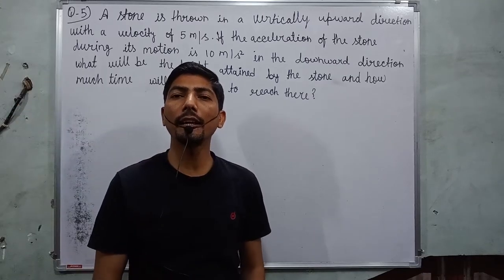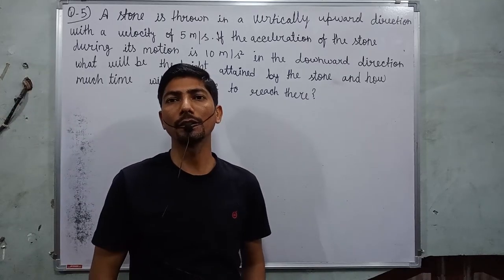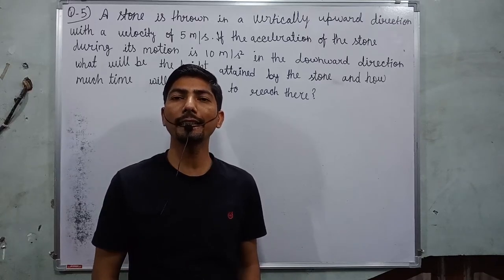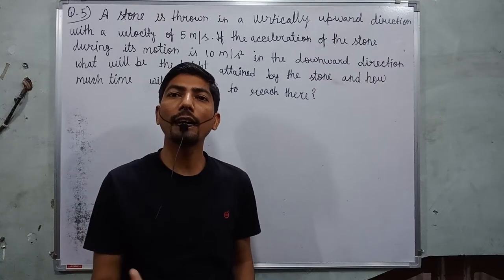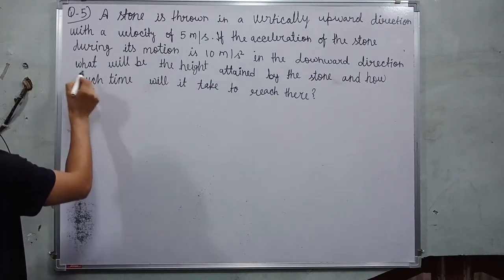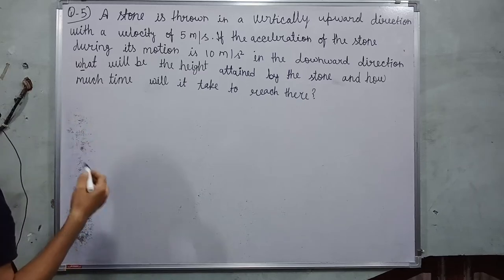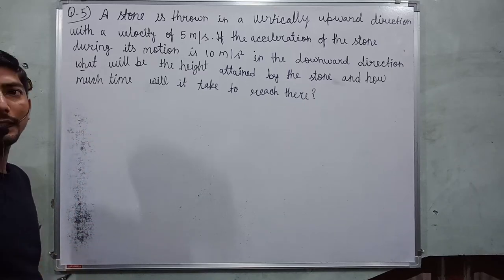In this question, there are two things that are asked. First thing is distance and second thing is time. How do we identify what thing is asked? These are question words and they are telling you what they asked.